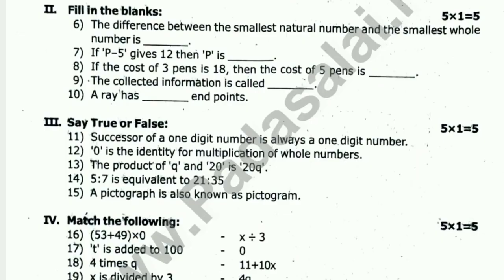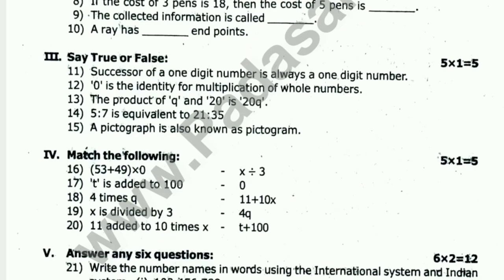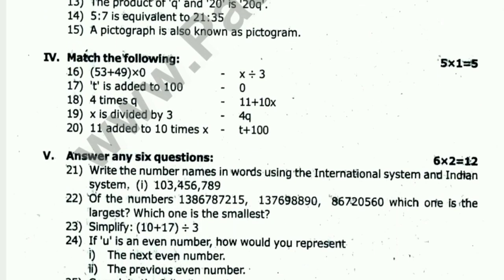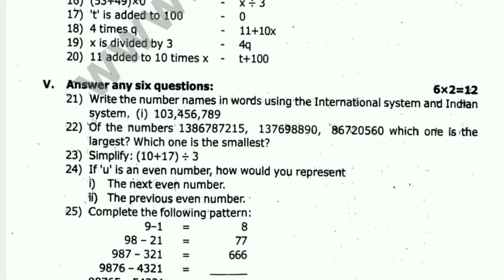The character information is called — dash. Array has — dash — in points. Next, say true or false — 5 questions. Answer true or false. Next, match the following — 5 questions. Correct and match.